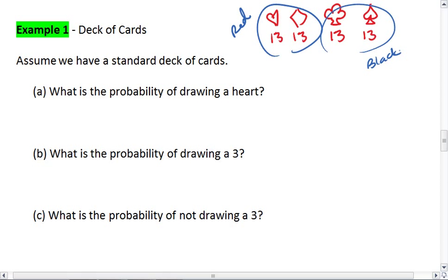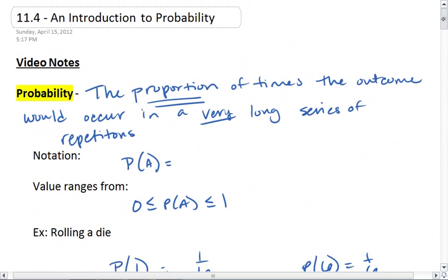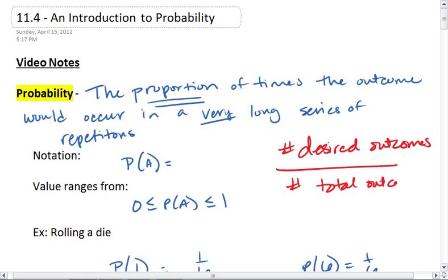So first thing we want to figure out is the probability of drawing a heart. In general, and you might want to go up and write this, probability is the number of desired outcomes over the number of total outcomes. This is the big idea. It's the number of desired over the number of total.